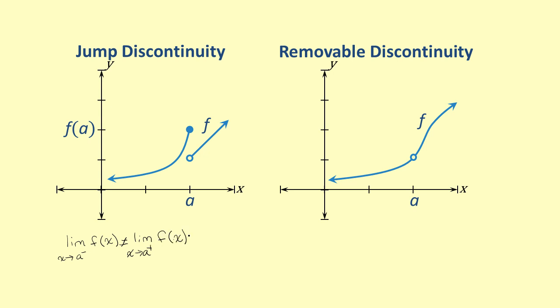The other main type of discontinuity, a removable discontinuity, looks like a hole in the graph. A function f has a removable discontinuity at a if f(a) does not exist, or if f(a) is not equal to the limit of f(x) as x approaches a. Removable discontinuities typically occur with rational functions, but can also occur in piecewise functions.